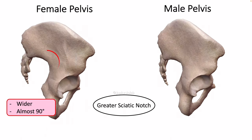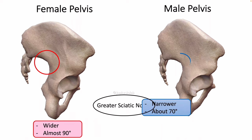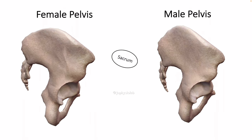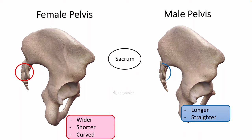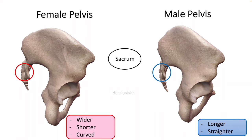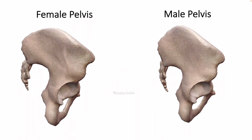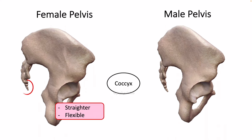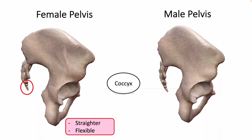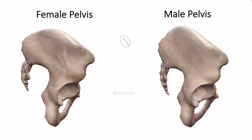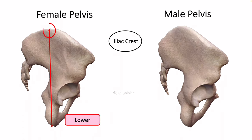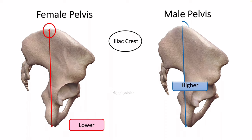The greater sciatic notch is wider in females. The male sacrum is longer, narrower, and straighter relative to the female sacrum. The coccyx bone of the male curves more toward the front of the body in comparison to the female's coccyx. The male pelvis is also taller due to a higher iliac crest and is narrower overall.